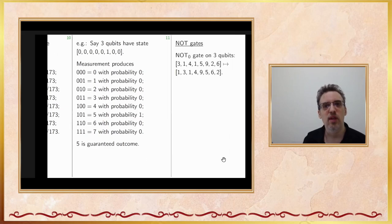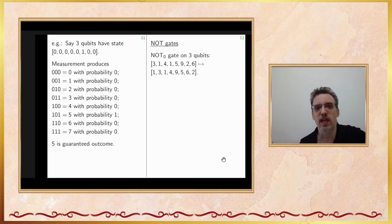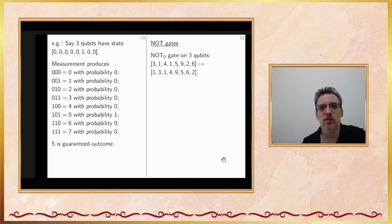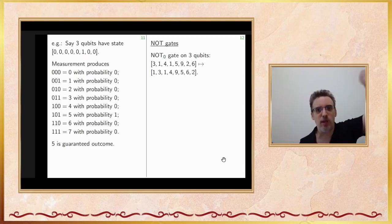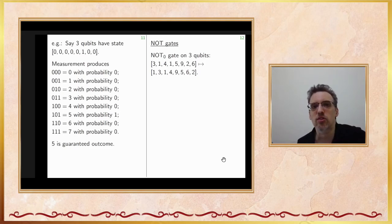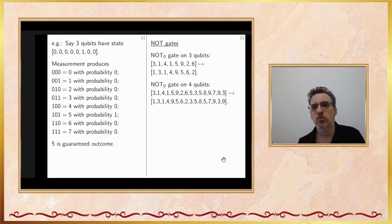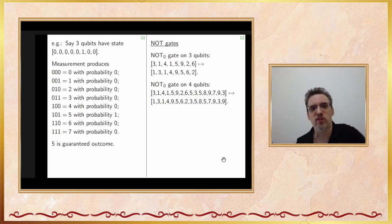Let me introduce the gates, starting with the NOT gate. With n qubits, there are n different NOT gates, one per qubit. NOT on qubit 0 swaps adjacent pairs in the vector: the pair (3,1) becomes (1,3), (4,1) becomes (1,4), (5,9) becomes (9,5), and so on. NOT 1 swaps at distance 2 within groups of 4. NOT 2 swaps at distance 4. In terms of measurement indices, NOT-0 flips bit 0 of the measured result — the least significant bit — which is why it's called NOT.